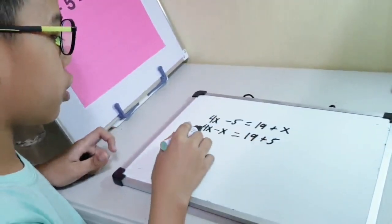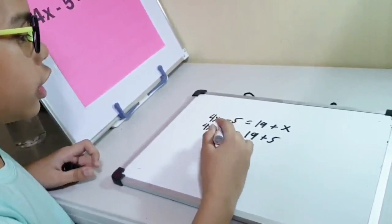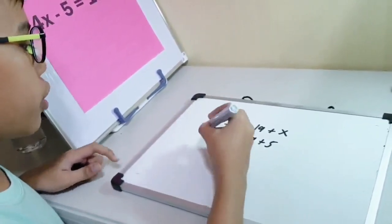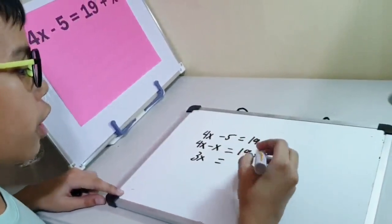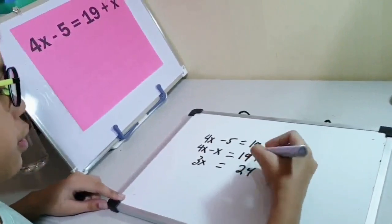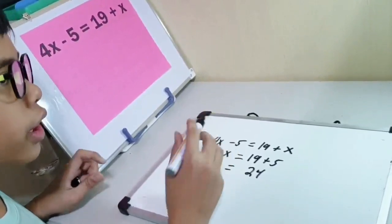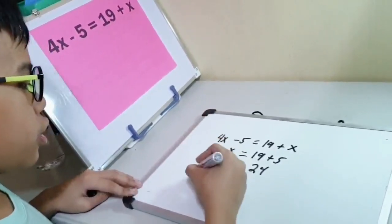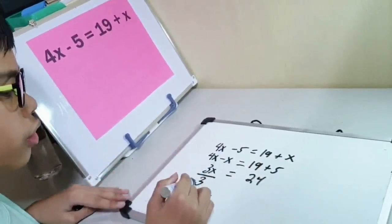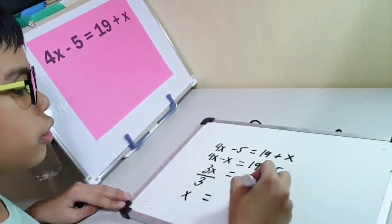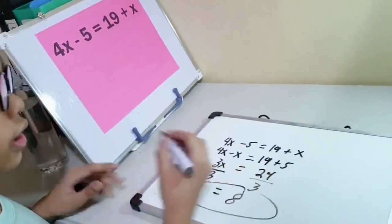We can already solve it. So 4X minus X - and we treat this X as the number 1. So 4 minus 1 is 3X equals 19 plus 5, which is 24. Now to get the X only, to remove the 3, we divide this by 3. Since we divide 3 by 3, we also need to divide by 3 on the other side. 24 divided by 3 is 8. Our X is 8.